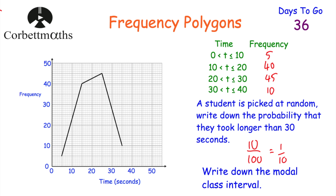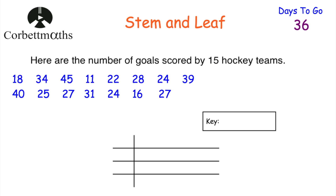Now let's have a look at stem and leaf diagrams. Let's start off by drawing one. Here we've got a question — it says: here are the number of goals scored by 15 hockey teams. So we've got 15 numbers of goals, perhaps over a season. I would like you to draw a stem and leaf diagram to represent this information, so press pause now and draw a stem and leaf diagram.